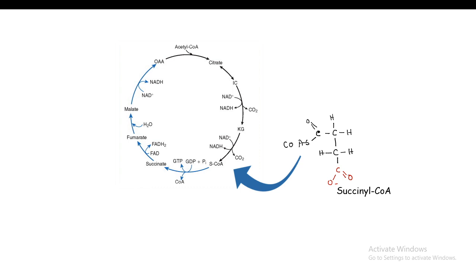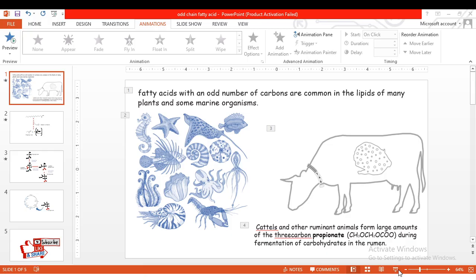And then it is either channeled into TCA cycle or broken down into two molecules of acetyl CoA. So this is all about odd chain number of fatty acid oxidation. I hope you enjoyed this video. If you like this video, give a big thumbs up. Don't forget to like, share and subscribe. Thank you.